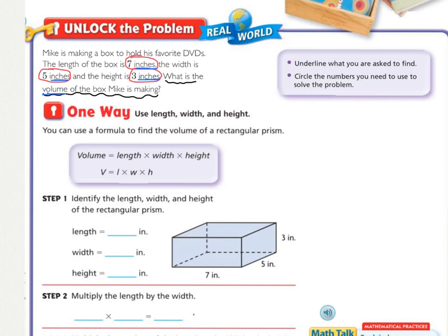One way to solve this is to use length, width, and height. So you can use a formula to find the volume of a rectangular prism. And a formula is just an equation, but it's written using letters to replace numbers. So it's volume equals length times width times height, or V equals L times W times H.